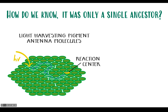Another hint is the light harvesting pigment antenna molecules — the pigment molecules in the chlorophyll that bounce light energy around, exciting electrons and filtering them off into a reaction center. That happens in photosystem two, and then photosystem one takes the products from that and basically makes the sugars. That's again a gross oversimplification of a very complicated process.